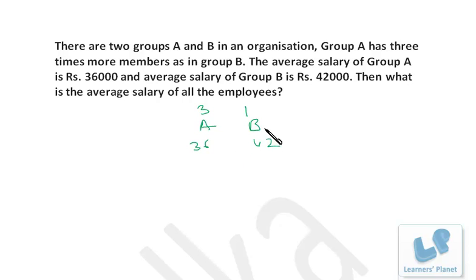The overall average will definitely be between 36 and 42. What is the difference between these two? That is 6.